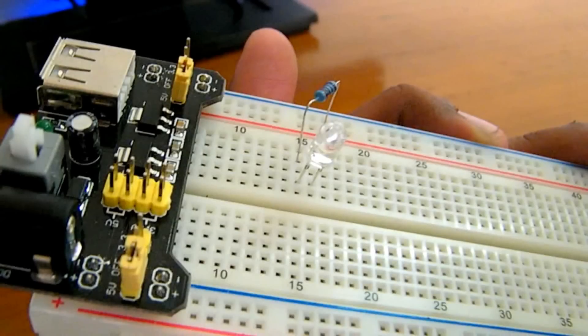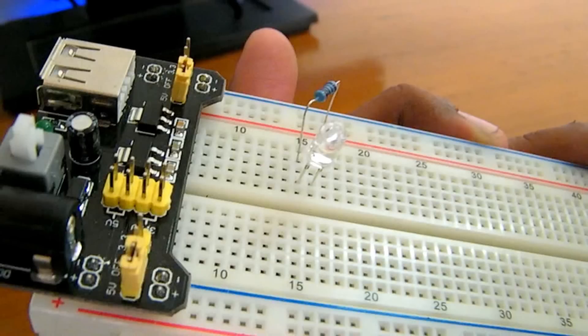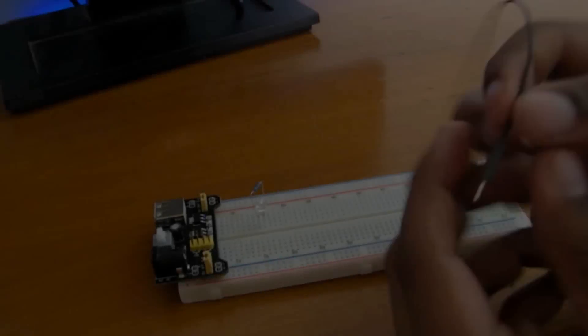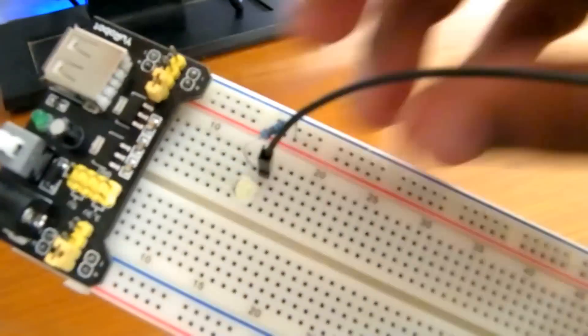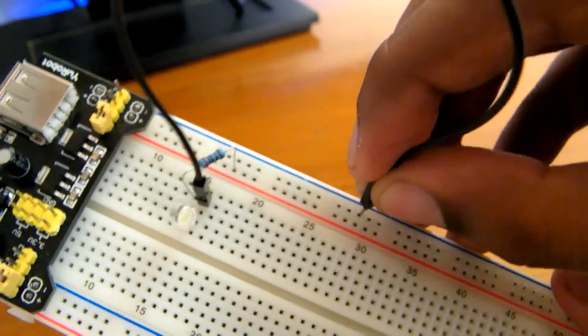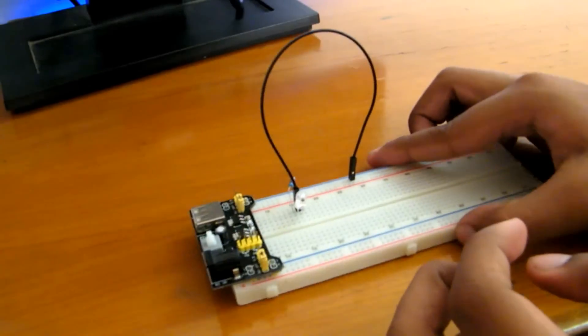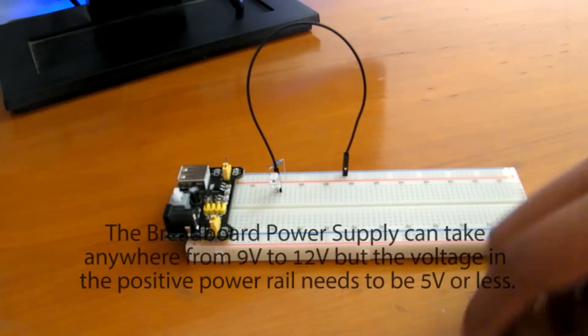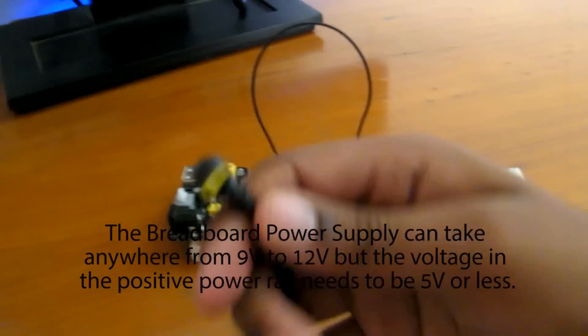Don't put both ends of the LED in the same row. Now take a wire and put its one end in the row with the negative lead of the LED. Put the other end in the ground rail of the breadboard. You can now connect your power source. Try not to use anything higher than 5 volts.